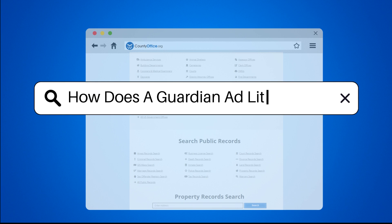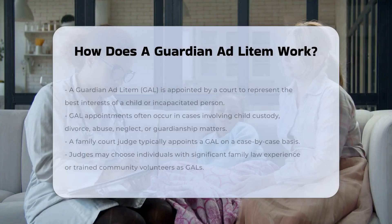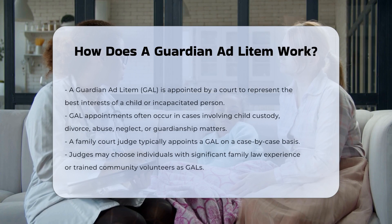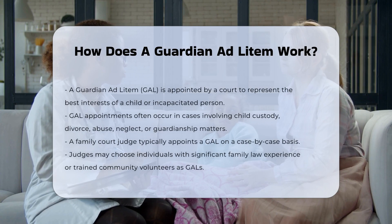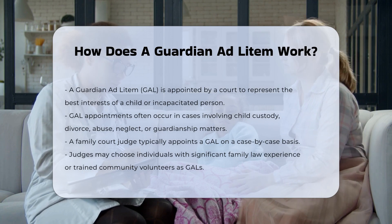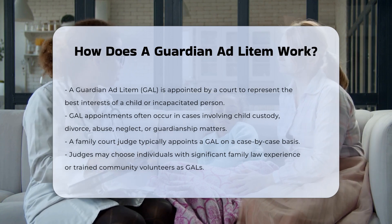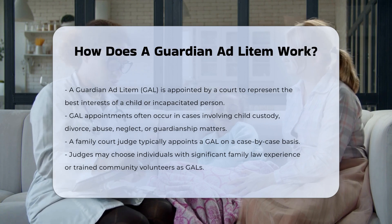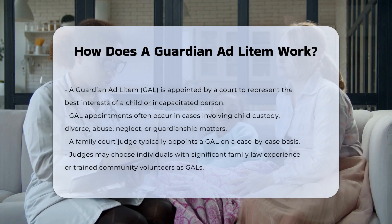How does a guardian ad litem work? A guardian ad litem, or GAL, is an individual appointed by a court to represent the best interests of a child or an incapacitated person in a legal proceeding. This appointment is typically made in cases involving child custody, divorce, allegations of abuse or neglect, or guardianship matters.